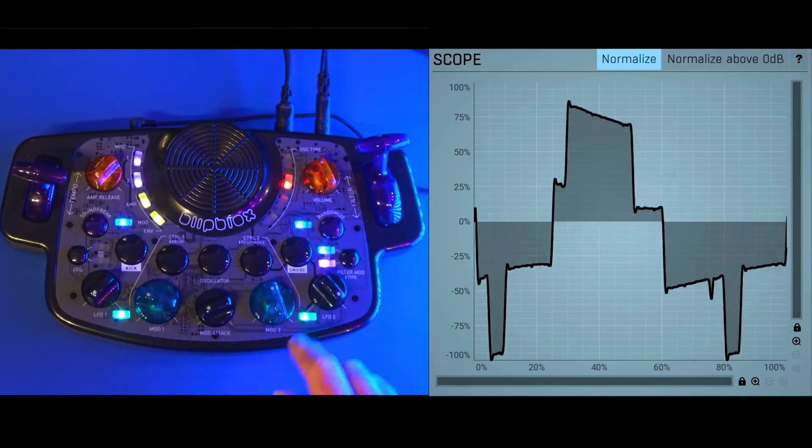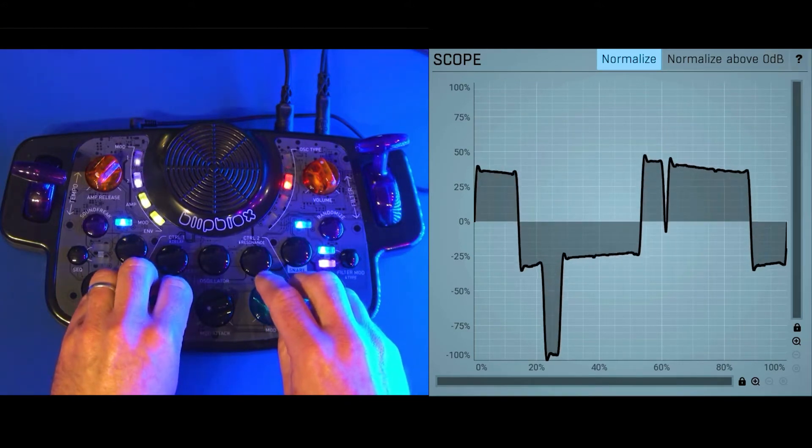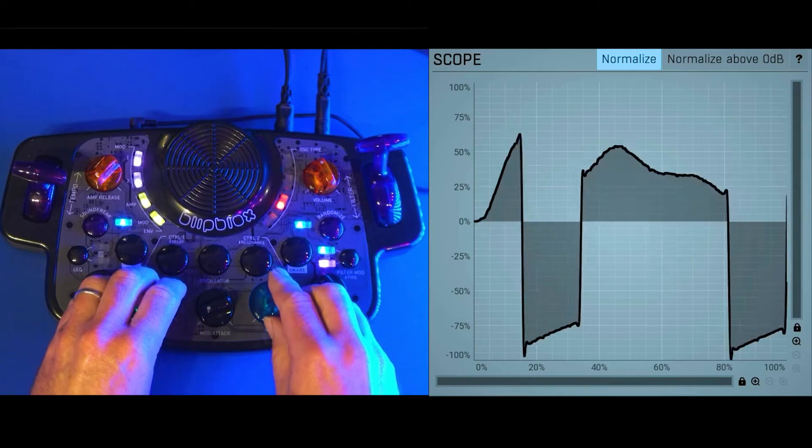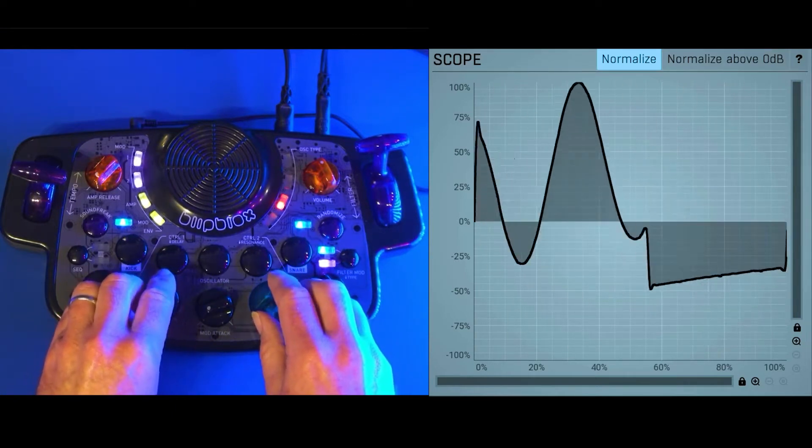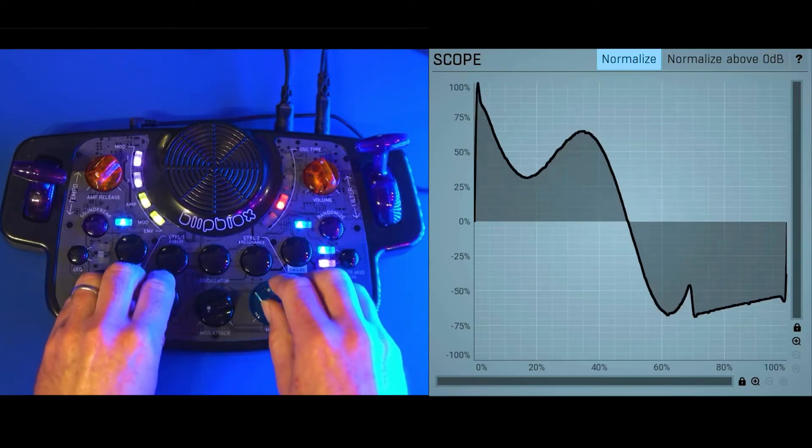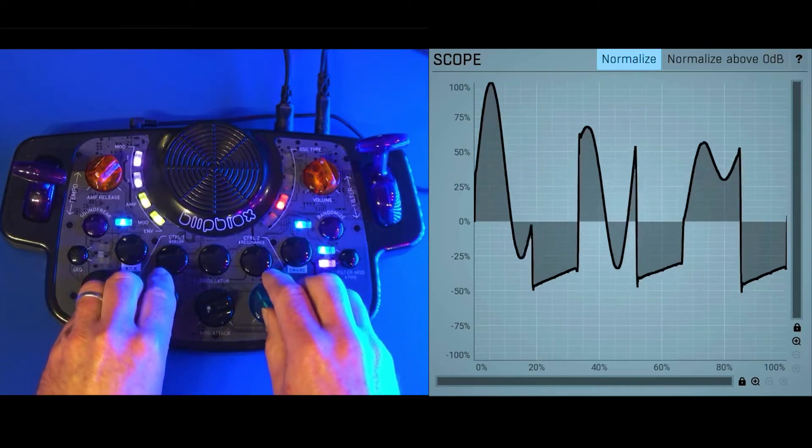You'll notice in this video that we have no modulation set on the Blip Blocks. It is all just coming directly off our oscillators. There's no effects and the filter is wide open. This really gives us the opportunity to hear exactly what these oscillators are doing. Let's take a look here.